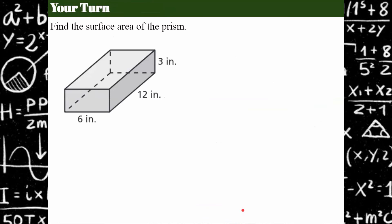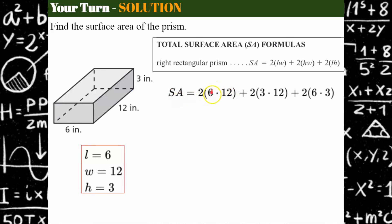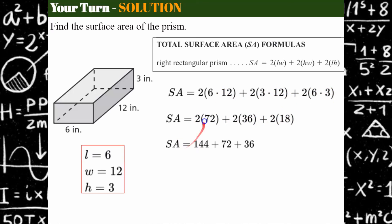Your turn. Pause the video and find the surface area of this prism using the strategy that works best for you. Come back when you're ready to check your work. Welcome back — let's see how you did. I'll use the formula. Identify length, width, and height, then plug them in: length times width is 6 times 12 = 72, height times width is 3 times 12 = 36, and length times height is 6 times 3 = 18. So: 2 times 72 = 144, 2 times 36 = 72, 2 times 18 = 36. Add them together for a surface area of 252 square inches.